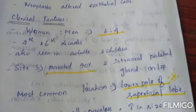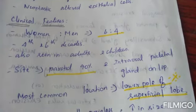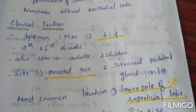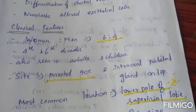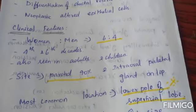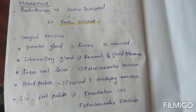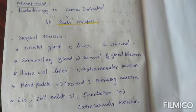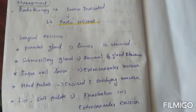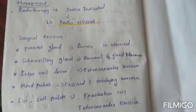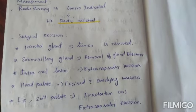Regarding clinical features, sex and age: the women to men ratio is 6 to 4, so it most commonly occurs in females. For intraoral lesions, in the hard palate the lesion is excised with overlying mucosa, while in the lip and soft palate, enucleation or extracapsular excision is performed.